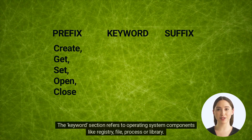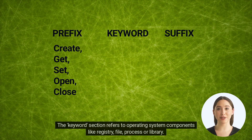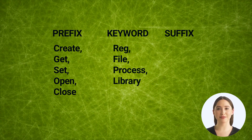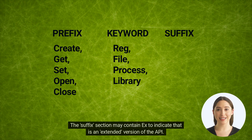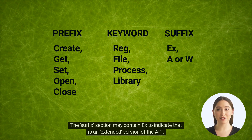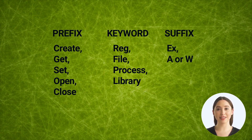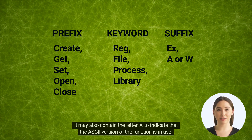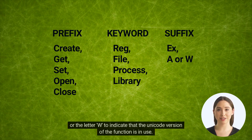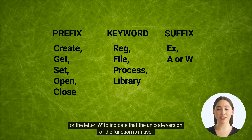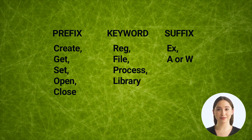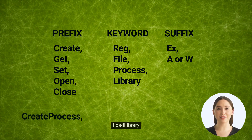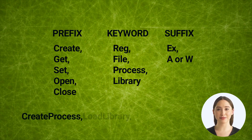The keyword section refers to operating system components like registry, file, process, or library. The suffix section may contain 'x' to indicate an extended version of the API, 'A' to indicate the ASCII version of the function, or 'W' to indicate the Unicode version. Some examples of API names are CreateProcess, LoadLibrary, and CloseHandle.